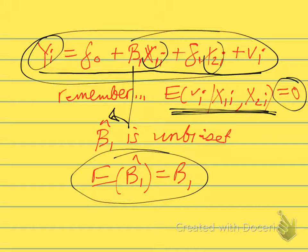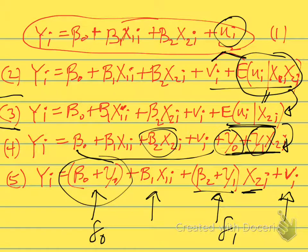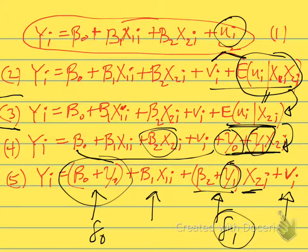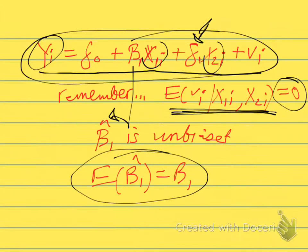Notice, however, this will not be true for the coefficient on x2. δ₁ is not equal to β₂, because δ₁ equals β₂ plus γ₁. We don't know what γ₁ is, so knowing δ₁ from our estimated regression doesn't tell us what β₂ is. In fact, δ₁ would be a biased estimate of β₂.